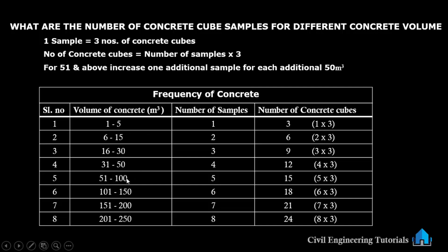So to summarize: for 31 to 50 cubic meters it is four samples; then for 51 to 100, five samples; 101 to 150, six samples; 151 to 200, seven samples; and 201 to 250, eight samples. After 31 to 50 cubic meters, for each additional 50 cubic meters, we increase one sample. For 51 and above, increase one additional sample for each additional 50 cubic meters.